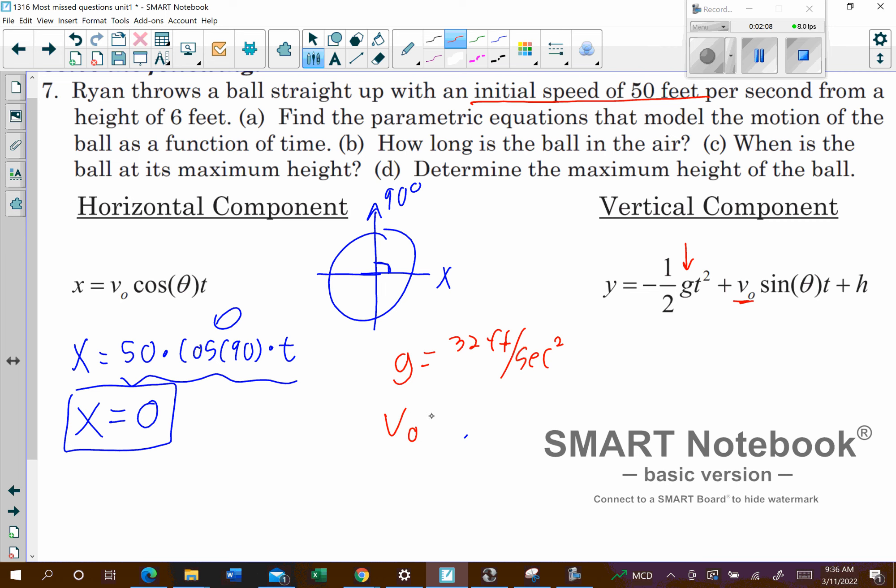I know v-naught, I'm going to put in 50 feet per second. I do know my angle straight up, so 90. And our height, we know the height too, because I'm going to start at a height of 6 feet.